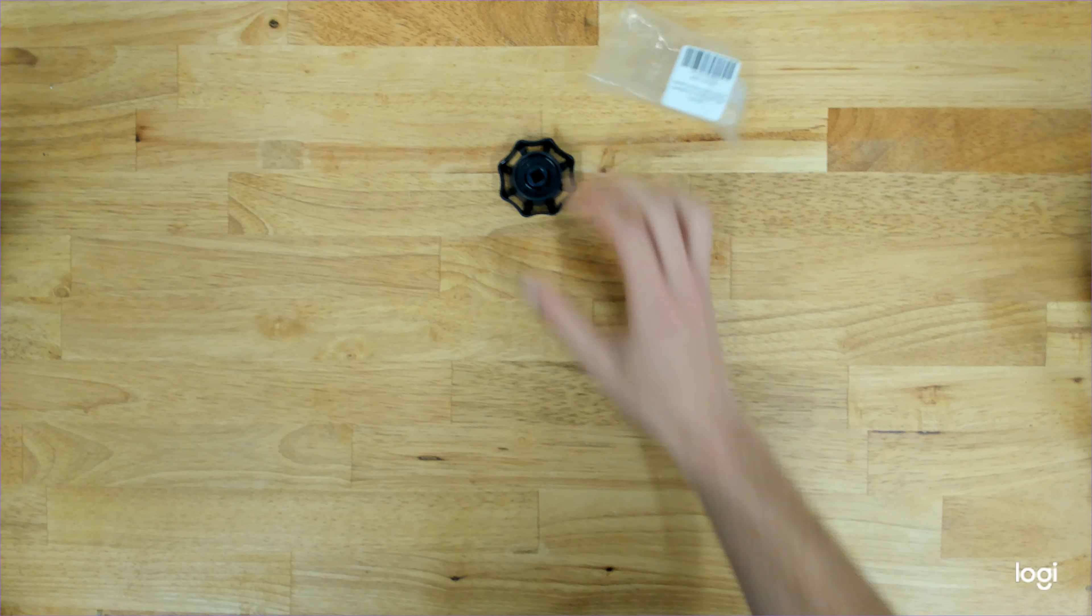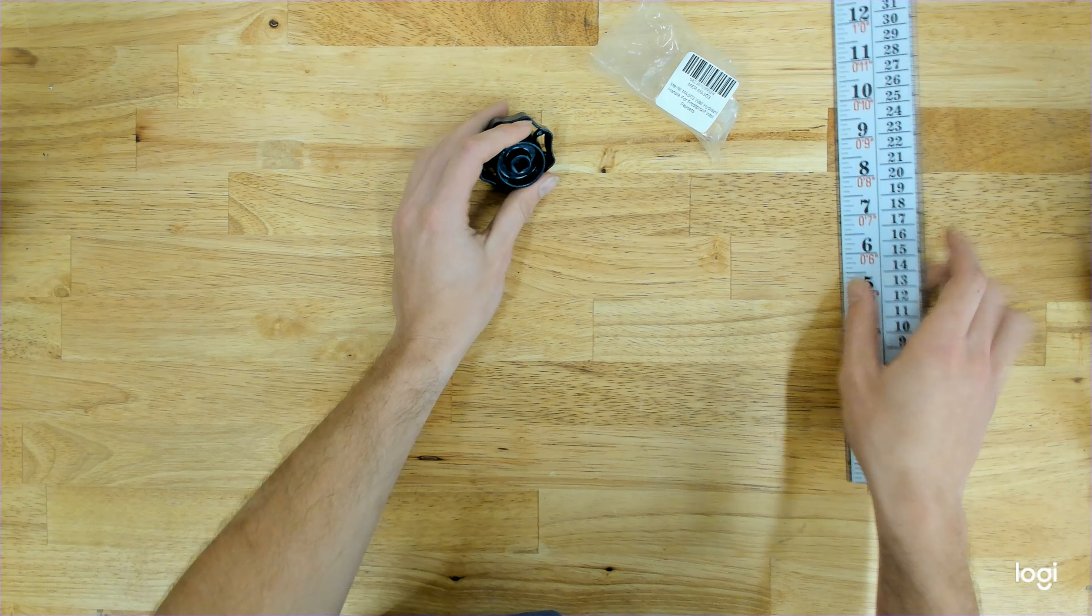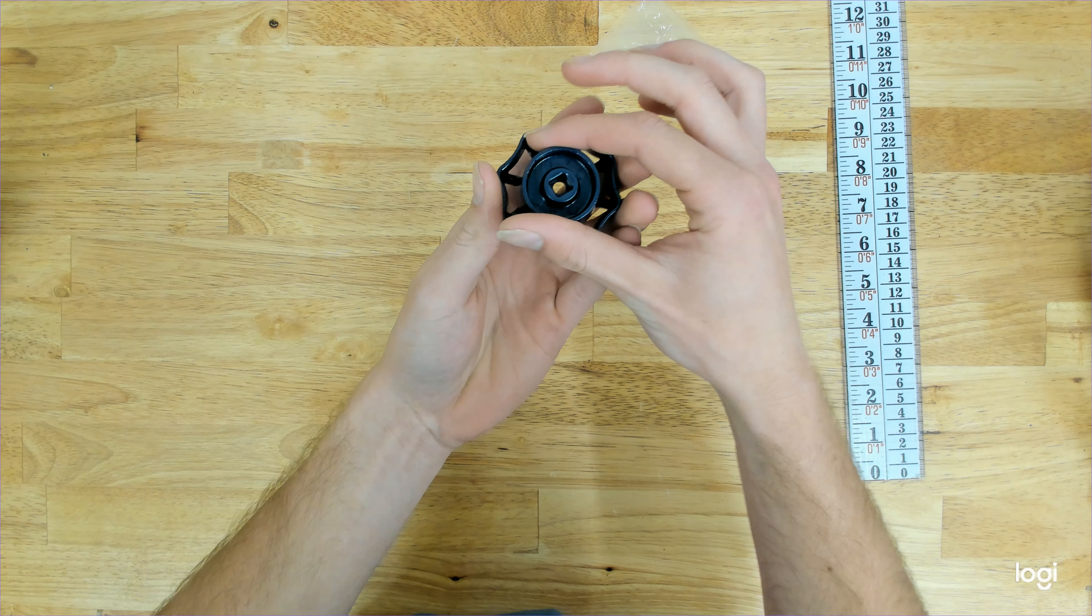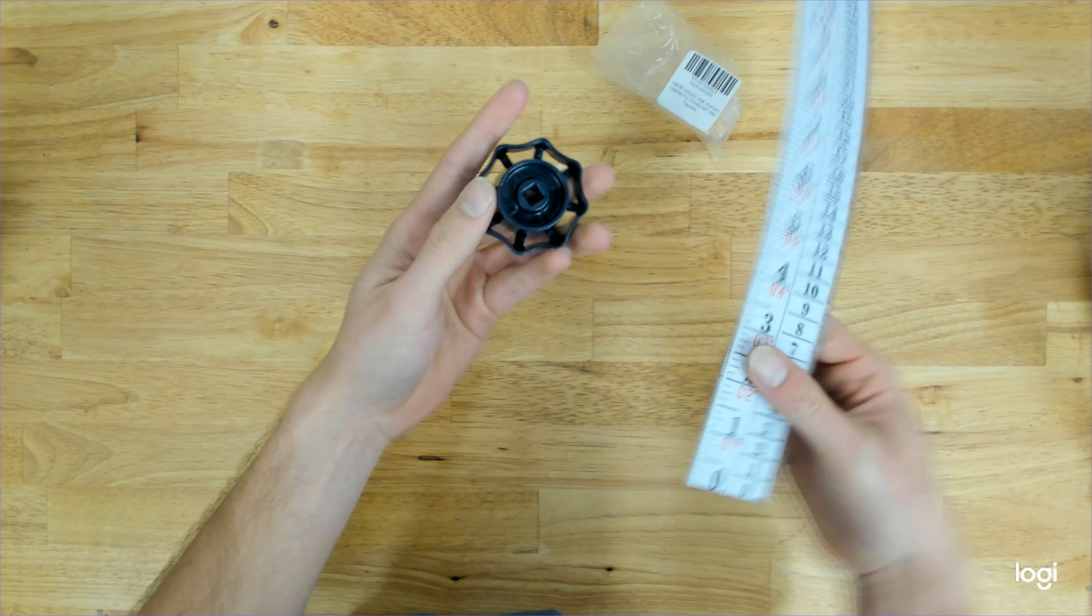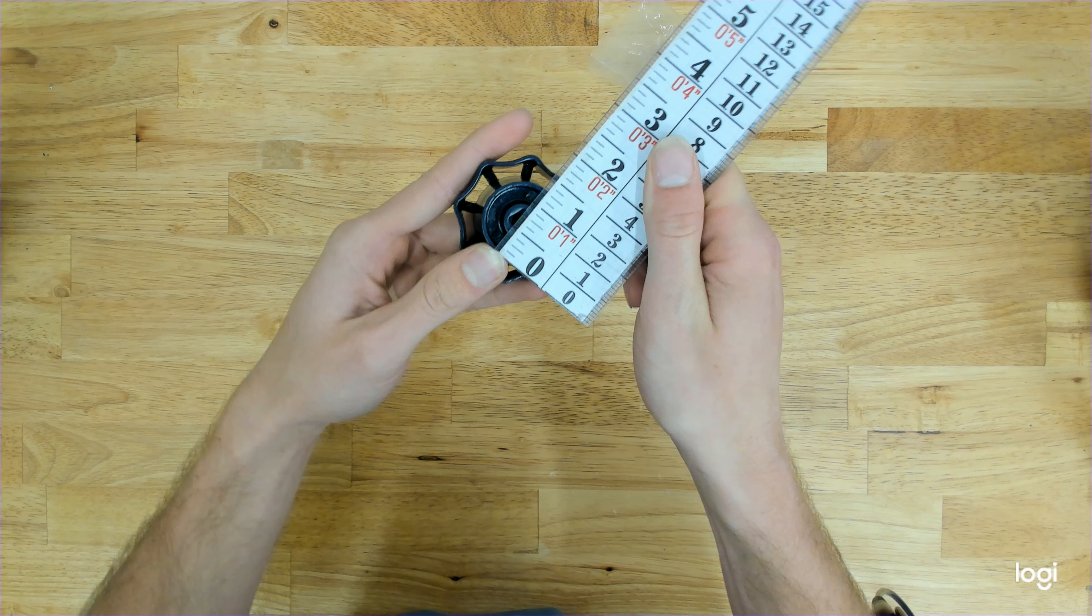So we can go ahead and get a couple measurements of the handle. We'll start with an outer diameter here at the base of the handle. That'll measure right at about an inch and a quarter.